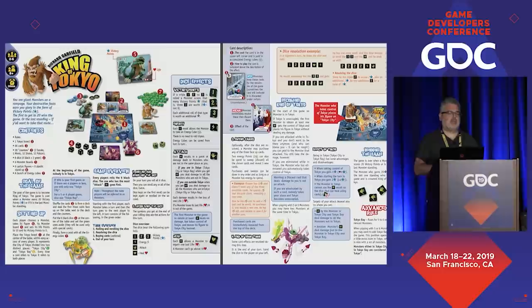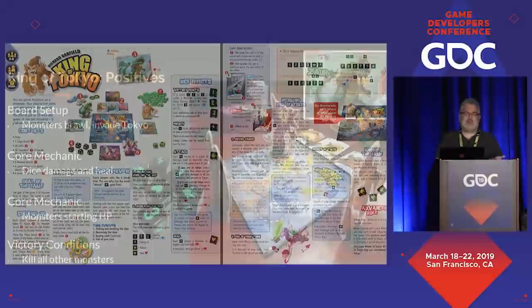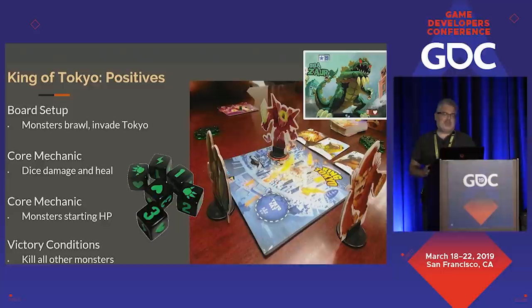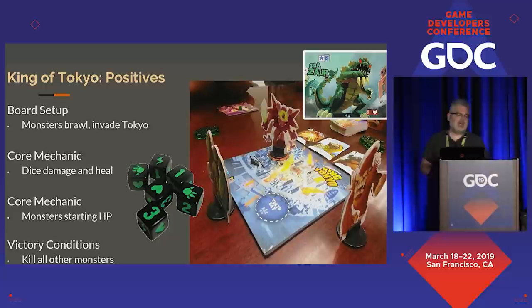King of Tokyo was another game I ran a lot. Again, it's a beautiful manual, but what can we figure out without it? Really intuitive — the idea is a monster brawl game, the figures are all posed like they want to kill each other, there's Tokyo on fire so they're trying to invade it. There's dice that look exciting: claws are the way you damage people, hearts are the way you heal yourself, and you win by killing all the other monsters.